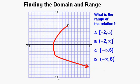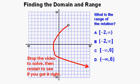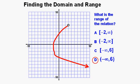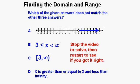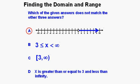What is the range of this relation in interval notation? Stop the video and answer the question, then restart to see if you got it right. The correct answer is D — the range is greater than negative infinity and less than 6. For the next problem, which of the given answers does not match the other three? The correct answer is A — in answer A it's graphed as greater than 3, while all the others are greater than or equal to 3.